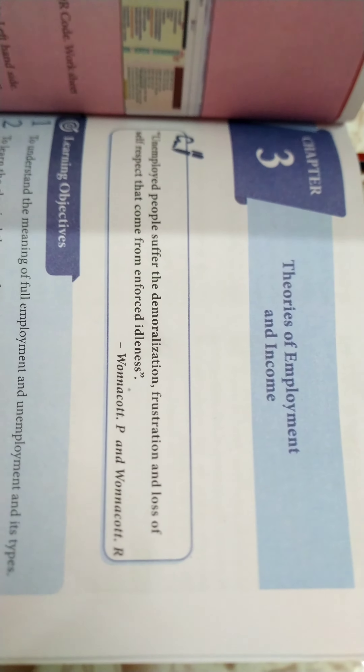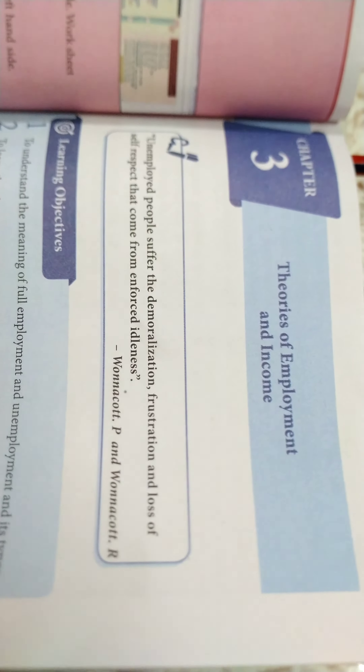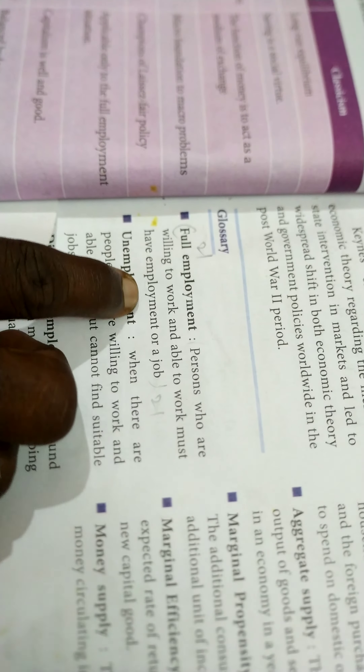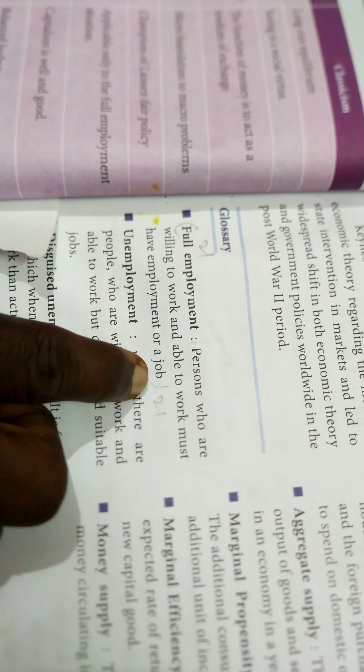Chart answers 1 to 7. Define Full Employment. Full Employment means that persons who are willing to work and able to work must have employment or a job. Keynes defines full employment as the absence of involuntary unemployment.